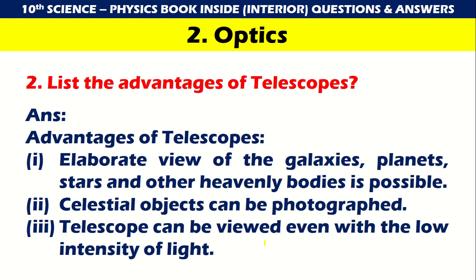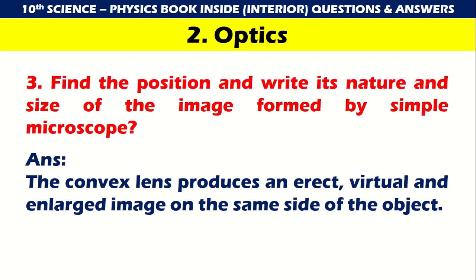List the advantages of telescopes. Advantages of telescopes: an elaborate view of galaxies, planets, stars and other heavenly bodies is possible; celestial objects can be photographed; and telescopes can be viewed even with low intensity of light. For a simple microscope, the convex lens produces an erect, virtual and enlarged image on the same side of the object.